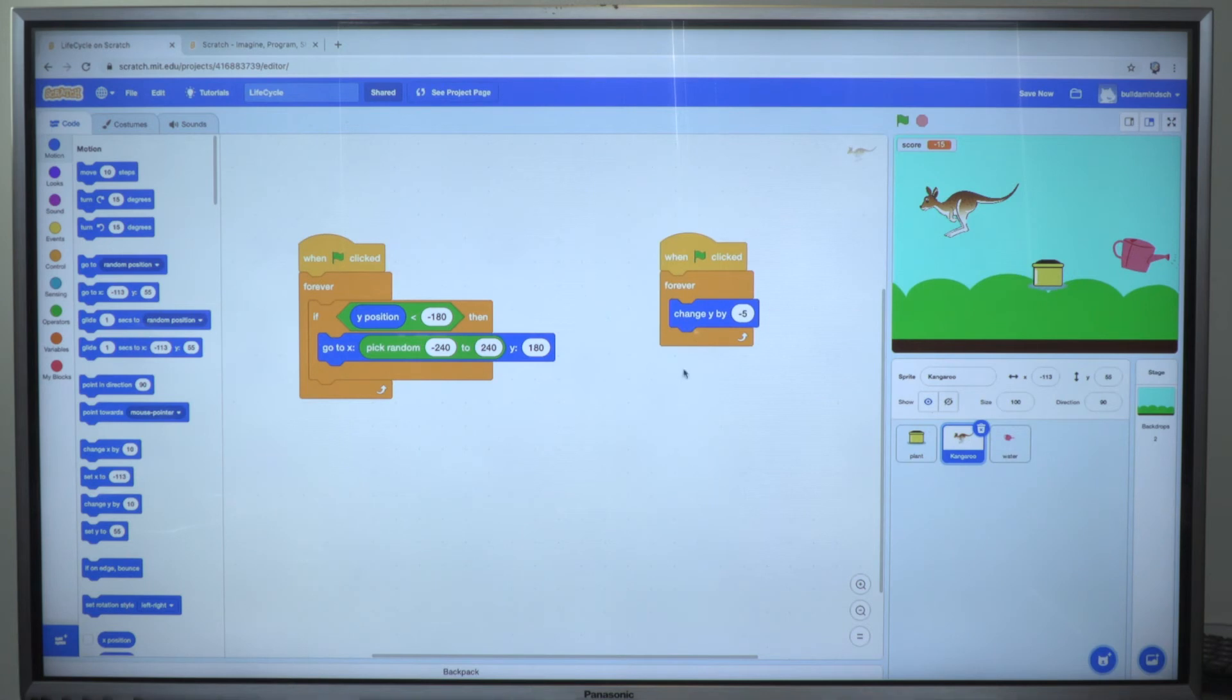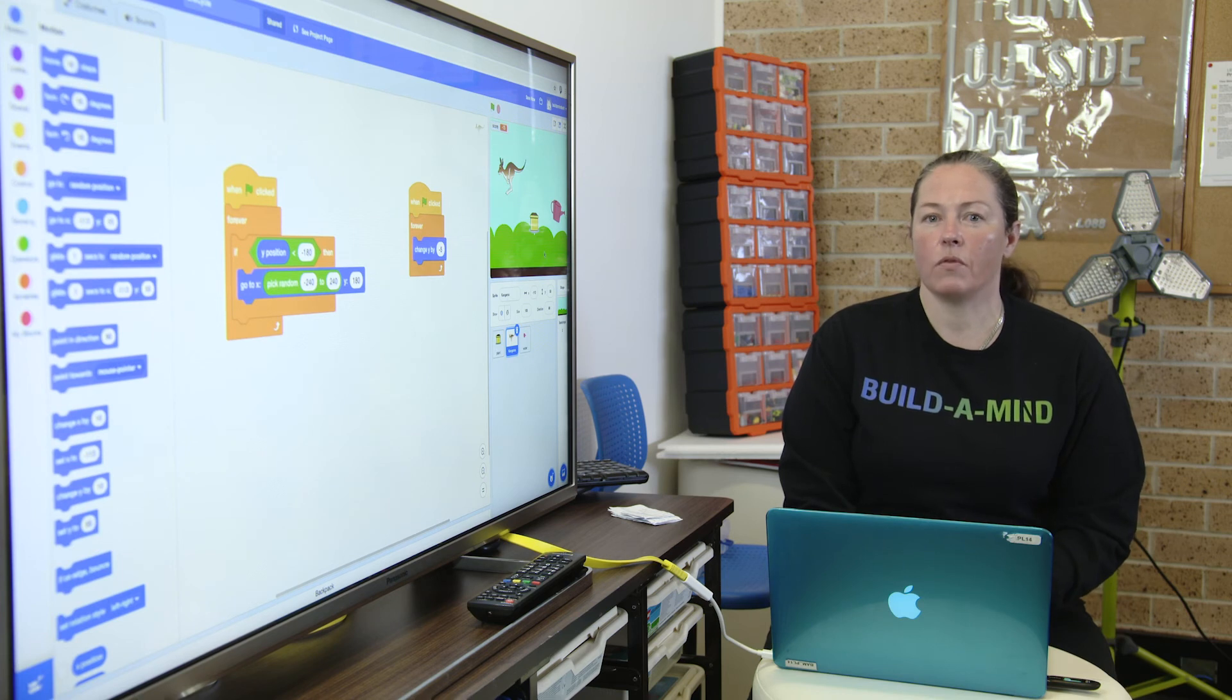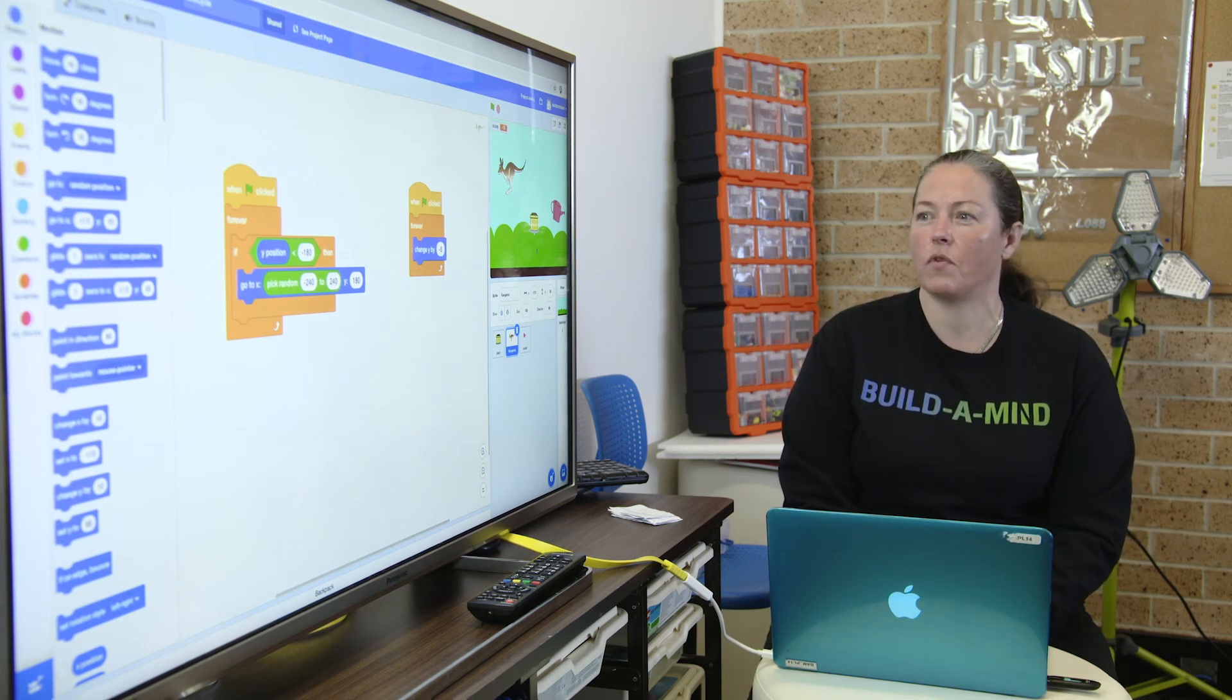It's got some very simple code. All it says is when I first start my game, so when my green flag is clicked, I want you to constantly move down the screen. If you get to the bottom of the screen, I then want you to go back to the top of the screen, but not in the same position you were at before, in a totally random position from left to right and continue to fall down the screen. That way my plant never knows where the kangaroo is coming from and it makes the game a little bit more exciting because he has to try and avoid it.